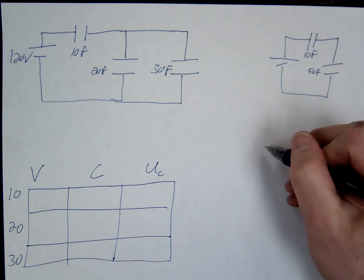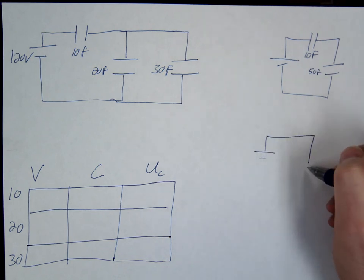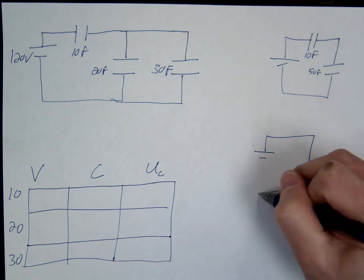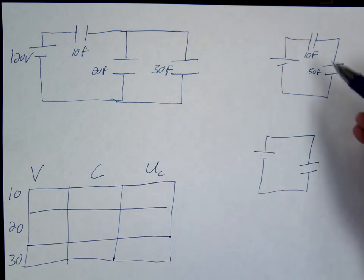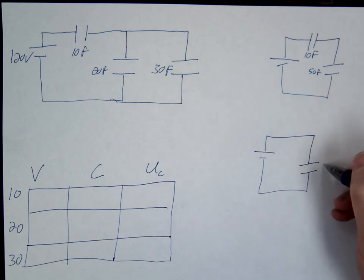And then for this one, this is where you're going to sum the reciprocals. So 1 over 10 plus 1 over 50 equals 1 over C, and that should be 8.33.